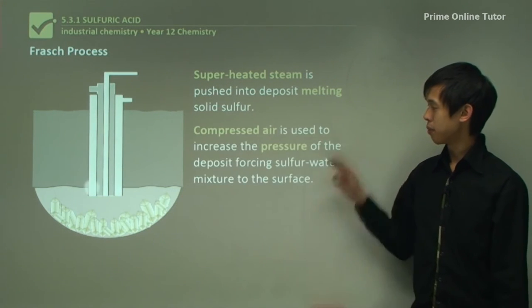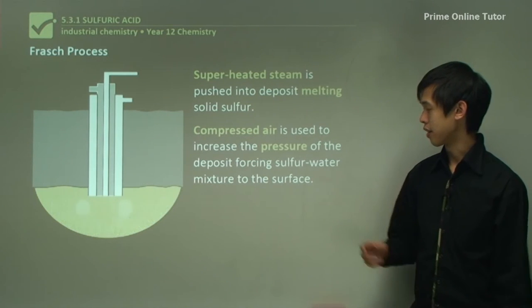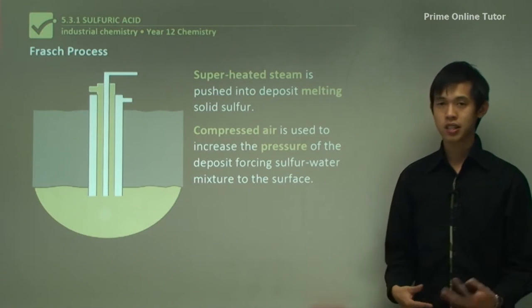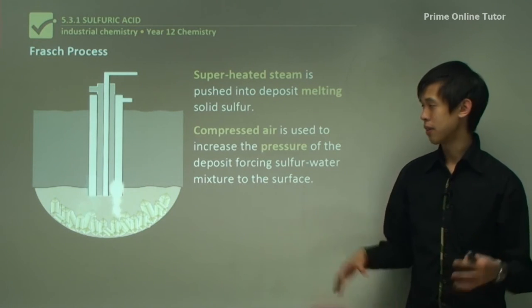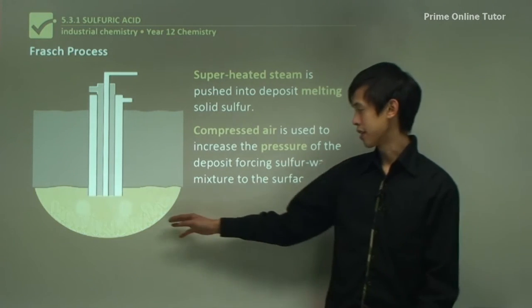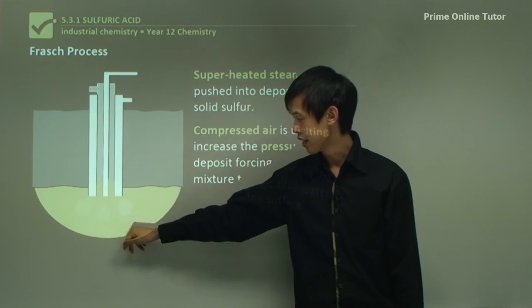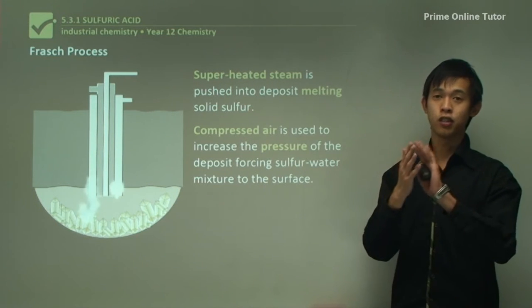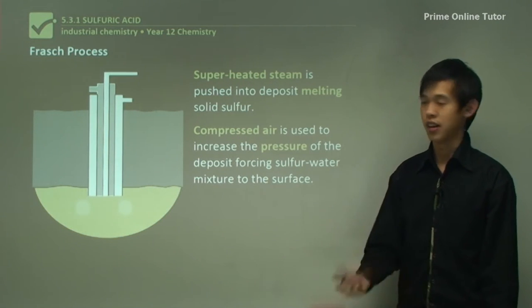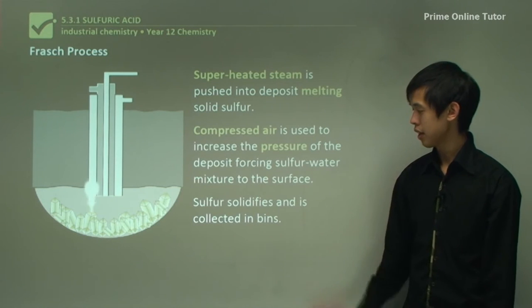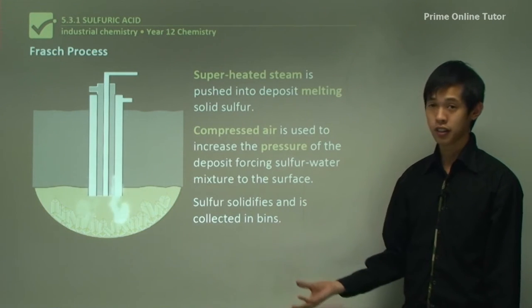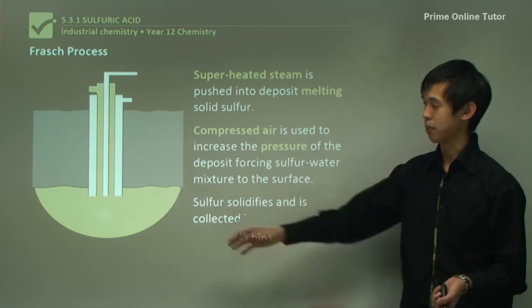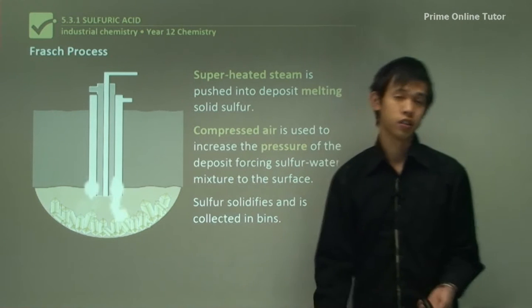Then we pump compressed air into the deposit, increasing the pressure, and that essentially forces the liquid sulfur back up to the surface. The sulfur then solidifies somewhere else and we collect it — that's how we get the pure sulfur from the deposit up to wherever we want it to go.